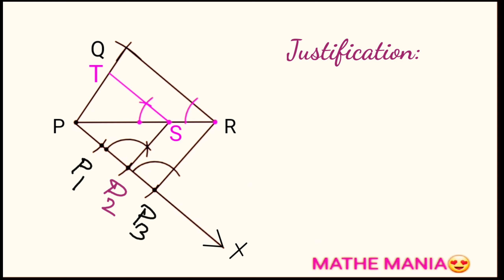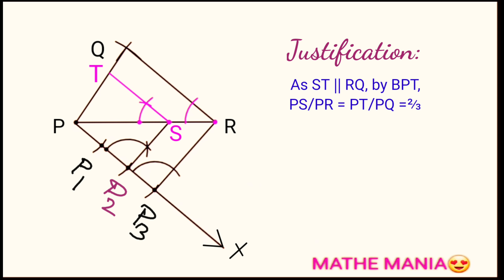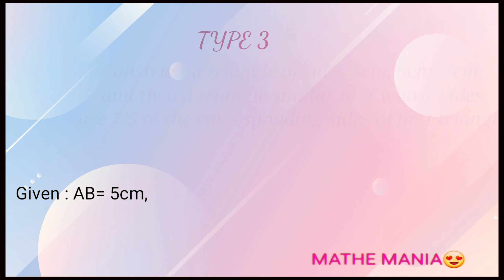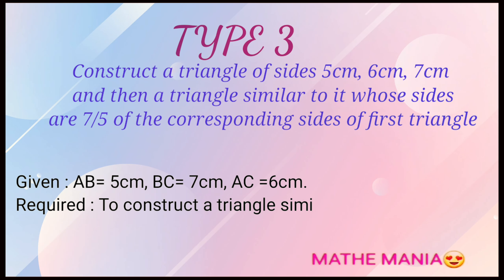We can easily justify our construction: since ST is parallel to QR, by BPT, PS/PR = PT/PQ = 2/3. With angle P being common, by the SAS criterion, the two triangles become similar. Now the third question is similar to the second one but with a little twist — let's see if you can do it.